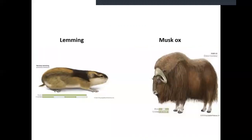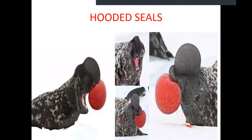Lemming is a small animal belonging to the rat family. The big animal is musk ox, which is something like a yak in India. Hooded seals are famous for the stretchy cavity or hood in their nose which they can inflate so that it looks like a bright red balloon. They inflate it to create fear in others, and this hood comes out of their left nostril.